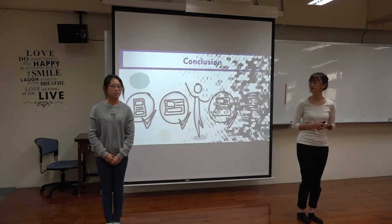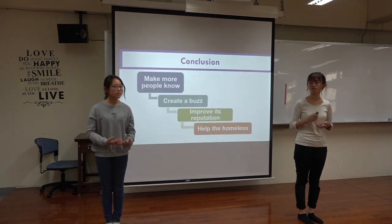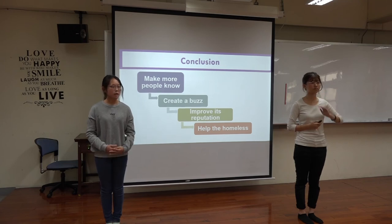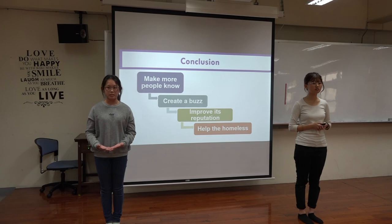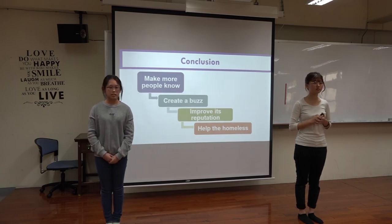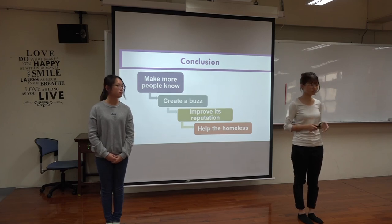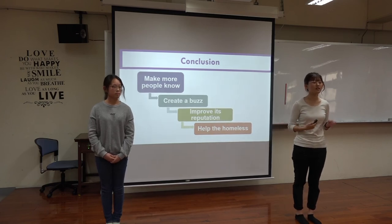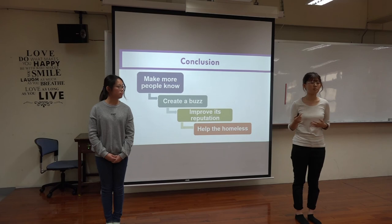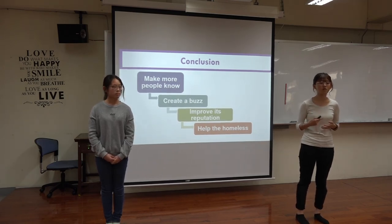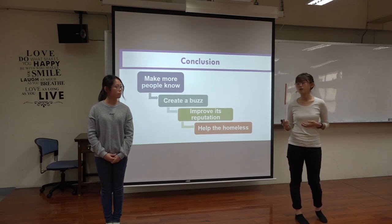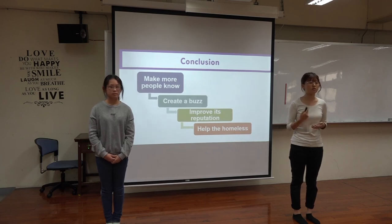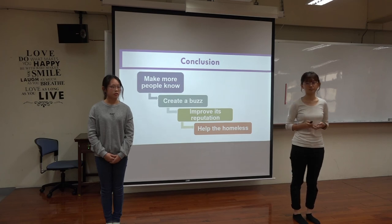We have four conclusions. First, make more people know about the Big Issue — the more details the public learns, the more likely they are to buy. Second, create a buzz: in order to make more people know what the Big Issue is and what its purpose is, the Big Issue can promote itself by focusing on its content, and a buzz campaign will be creative. Third, improve its reputation: we believe that sales will increase as long as the Big Issue enhances its promotion, and its reputation will be improved dramatically. And the last one, cover the whole market — it's the main purpose, and we all have a responsibility to do our part to make it happen.